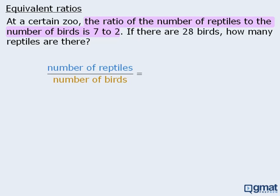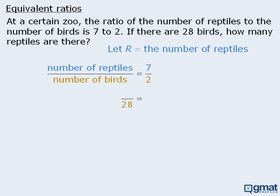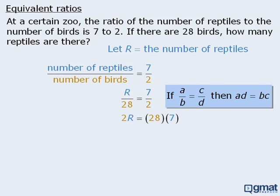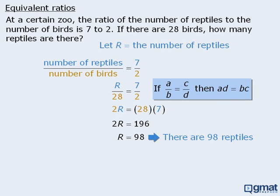The question tells us there are 28 birds, so we replace the number of birds with 28. We don't know the number of reptiles, so let r represent that number and replace it in our ratio. This ratio equals seven to two, giving us an equation to solve. Applying cross multiplication, simplifying the right-hand side, and dividing both sides by two gives r equals 98. This means there are 98 reptiles at the zoo.